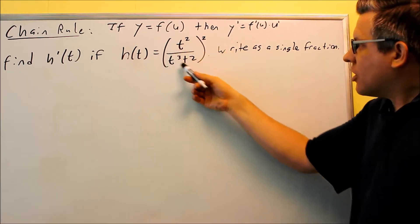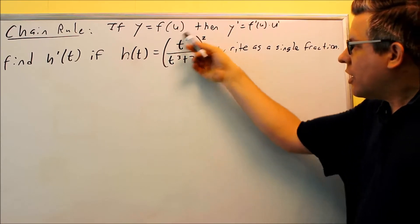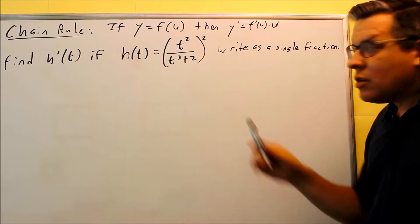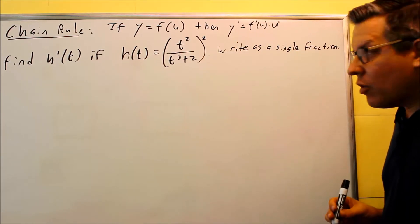Your u is going to be all this stuff inside, and so your outside function is going to be a square, basically, so u squared is going to be that one.